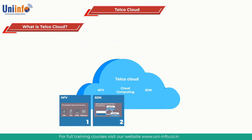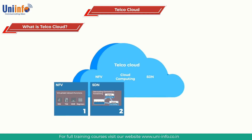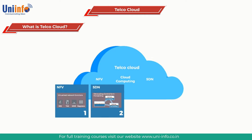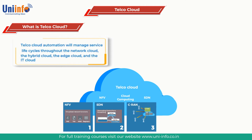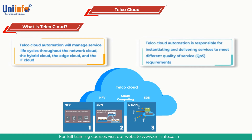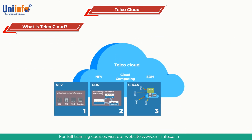In addition to this software foundation, Telco Cloud requires automated orchestration to manage CNFs and VNFs across all software-defined resources. Telco Cloud Automation will manage service life cycles throughout the Network Cloud, the Hybrid Cloud, the Edge Cloud, and the IT Cloud — Software-Defined Data Center, or SDDC — in an integrated and consistent manner. It is responsible for instantiating and delivering services to meet different quality-of-service requirements seamlessly across network resources. Error-prone human activities like service provisioning are automated to remove complexity and optimize overall resource utilization.